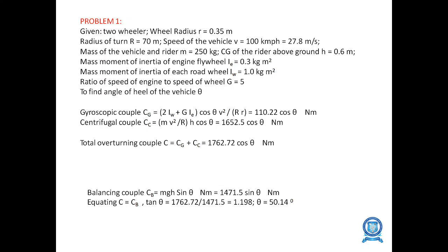To find theta, we use the formula. First, find the gyroscopic couple and centrifugal couple using the formula. The total overturning couple is the product of gyroscopic couple and centrifugal couple, which equals 1762.72·cos θ. The balancing couple formula is MGH·sin θ. Equating C = Cb·tan θ, we get theta = 50.14 degrees, which is the angle of heel of the vehicle.